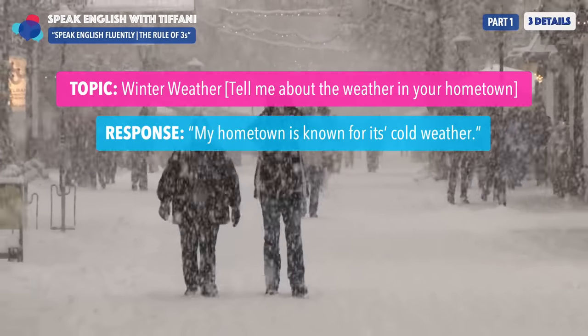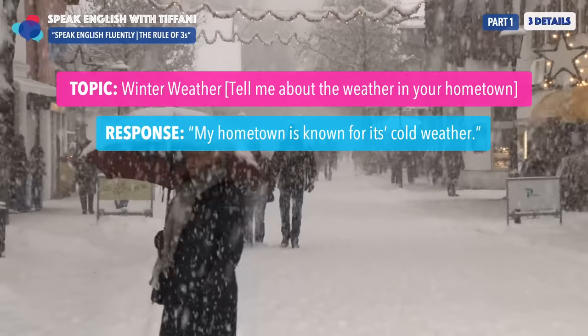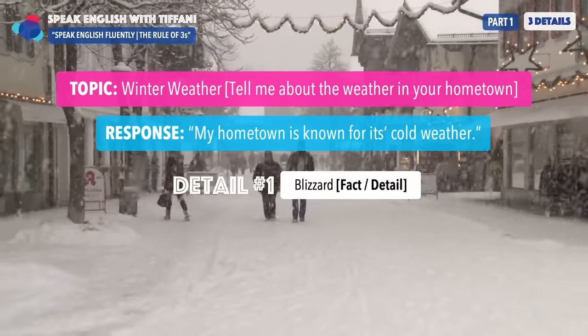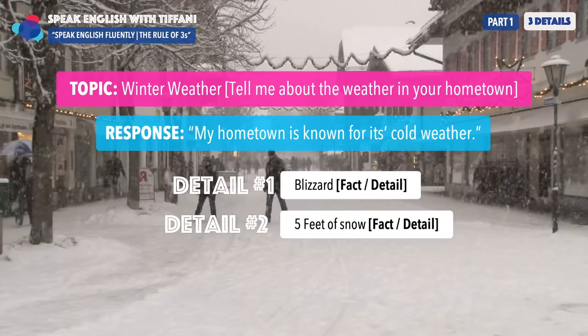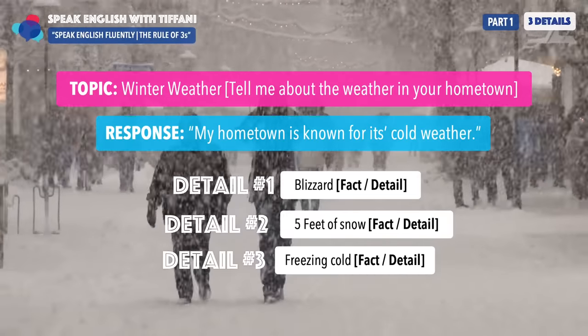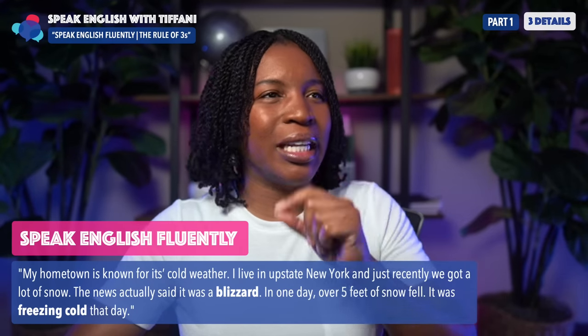You can give a basic response like: 'My hometown is known for its cold weather.' But what happens when you add three details? Detail number one: blizzard. Detail number two: five feet of snow. Detail number three: freezing cold. The basic response is 'My hometown is known for its cold weather,' but how will that response change when we add the three details?